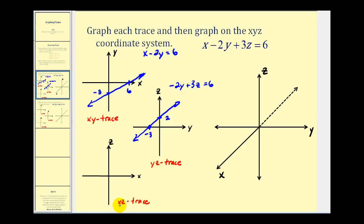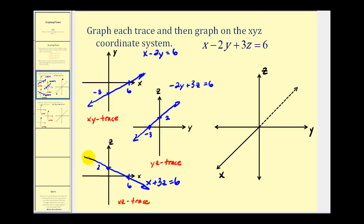And then lastly, to determine the xz trace, we set y equal to zero. If y is zero, we'll have the line x plus three z equals six. So our x intercept will be six again. And the z intercept — if x is zero — would have to be two. So this plane intersects the xz plane along this line here.